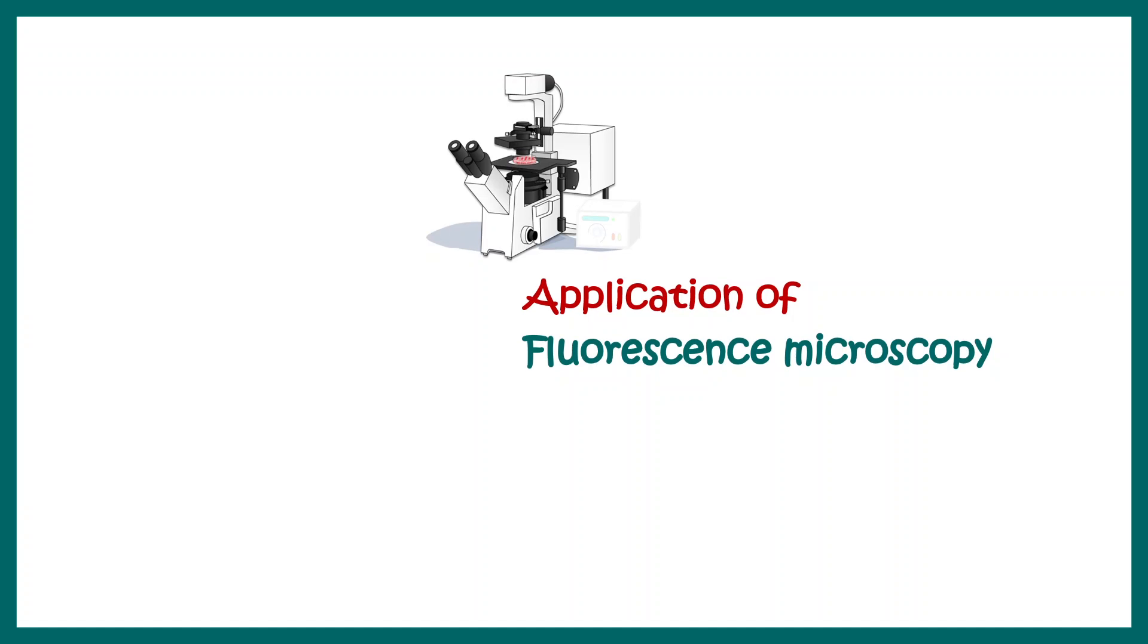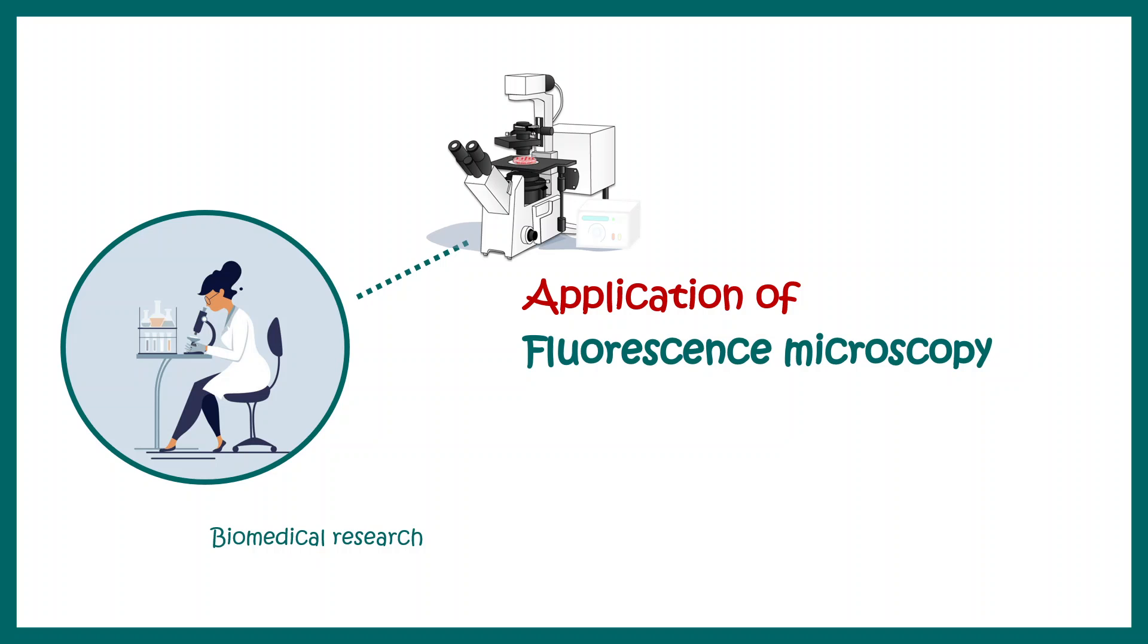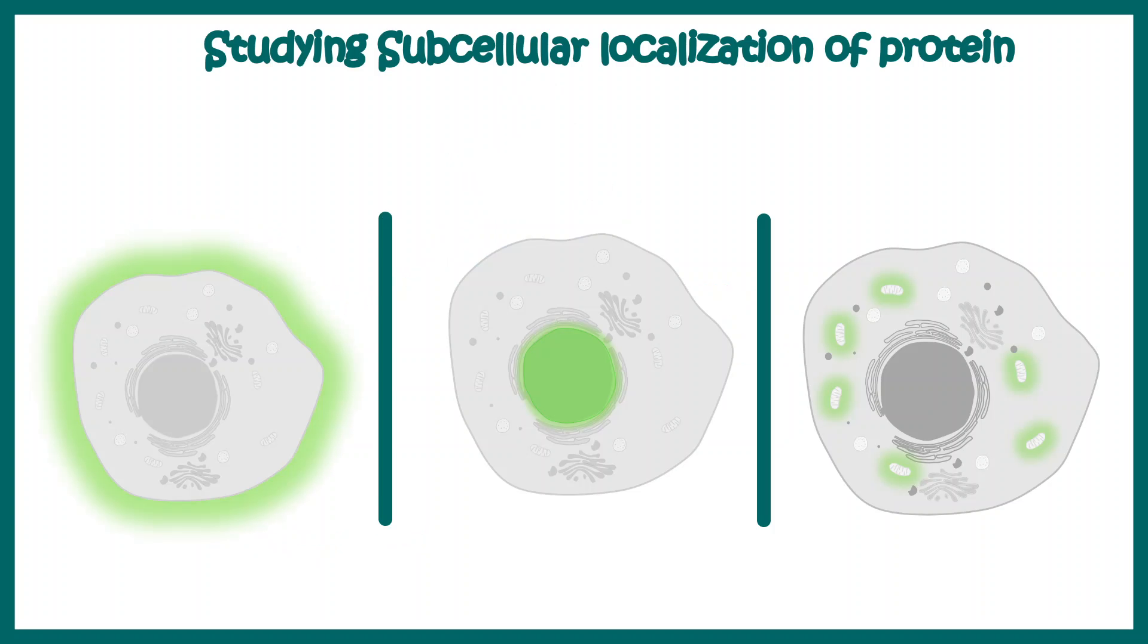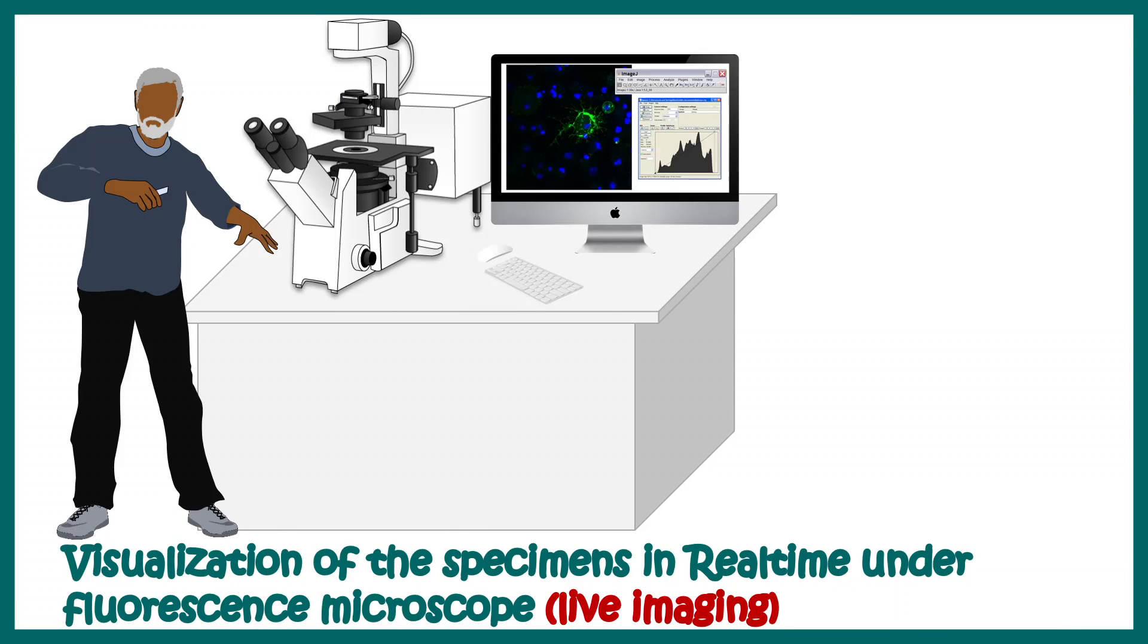Now let's look at the applications of fluorescence microscopy in biomedical research. First, we can study subcellular localization of a protein using fluorescence microscopy. In this case, we can tell that the protein in the left is expressed on the cell membrane. Secondly, the protein was localized in the nucleus. And third, it was localized in the mitochondria. We can also use this technique for visualization of the specimen in real time under fluorescence microscope, and this is known as live imaging.